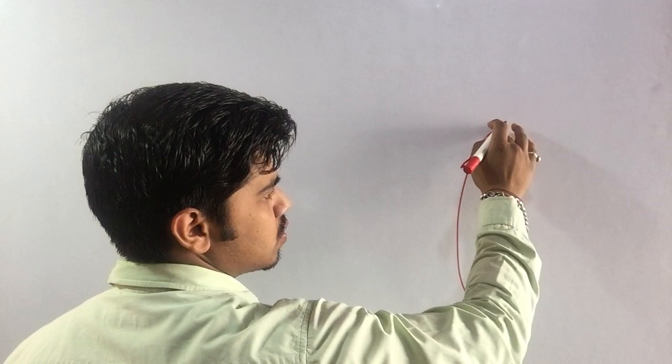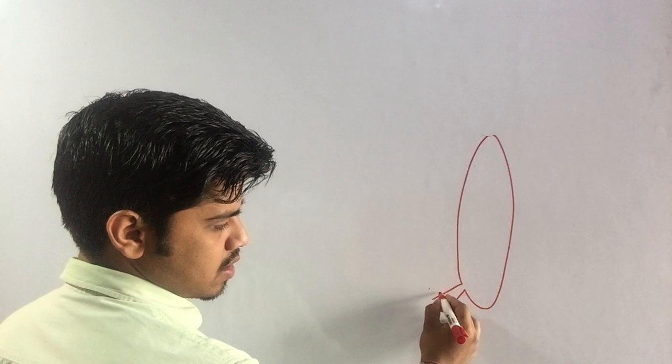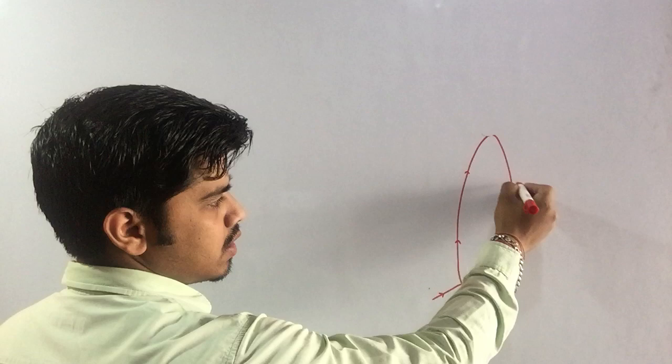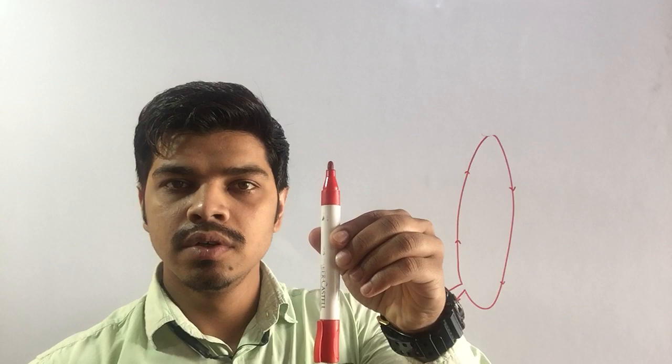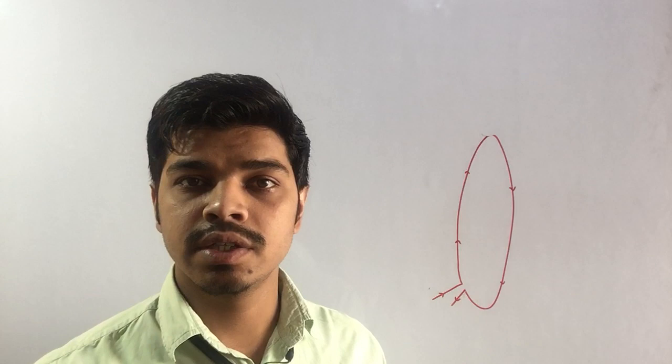For a circular ring, as we know the ring is carrying a current. Let us consider this is the entering point of current and this is the leaving point of current. As we know, a current carrying wire — a current carrying straight wire — creates a magnetic field, and the direction of magnetic field was given by the right hand thumb rule.